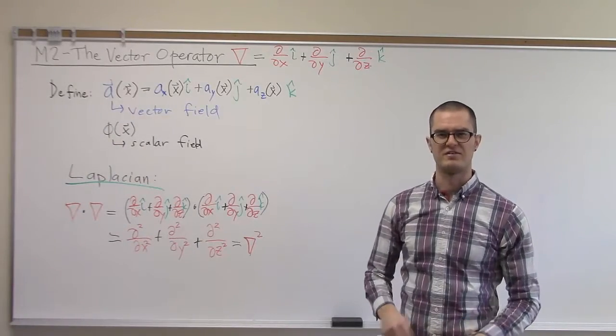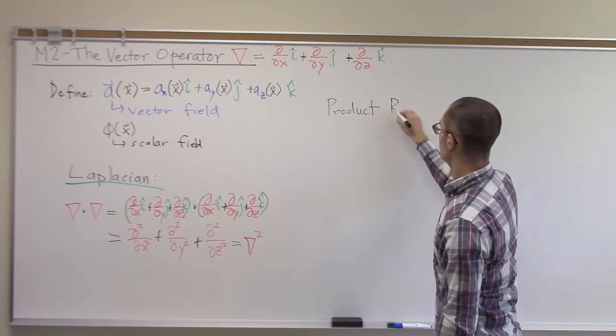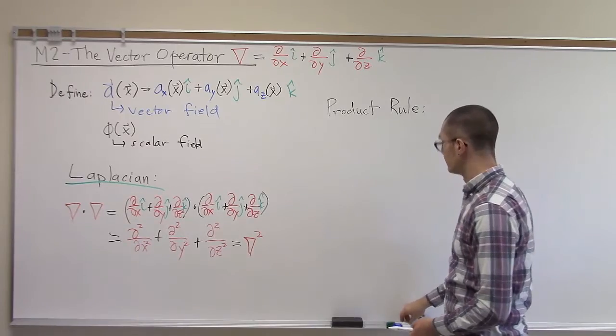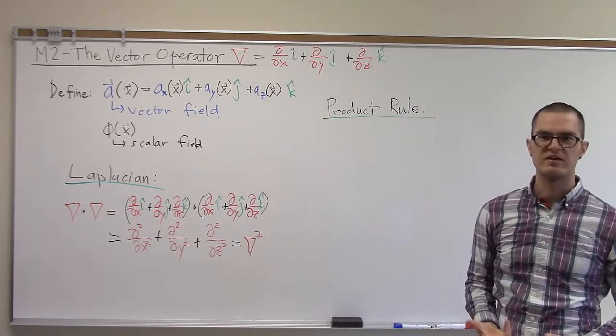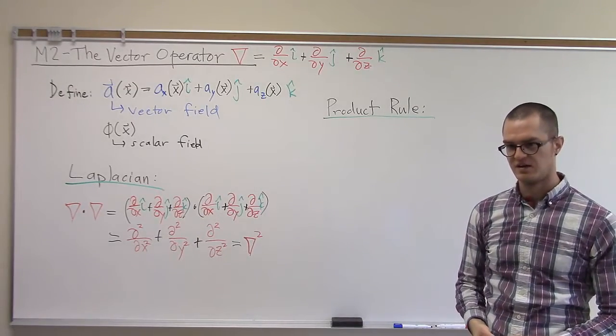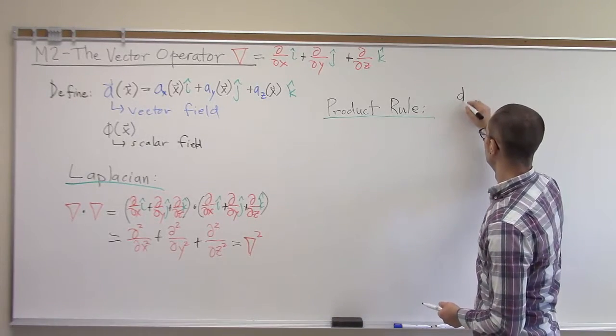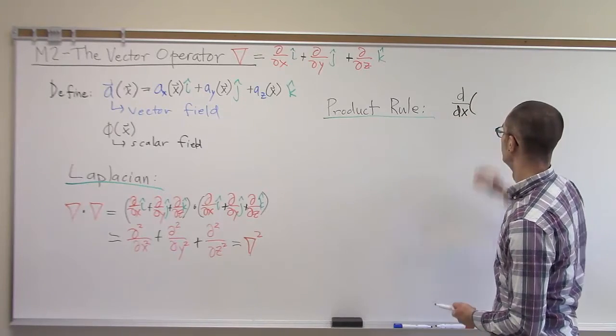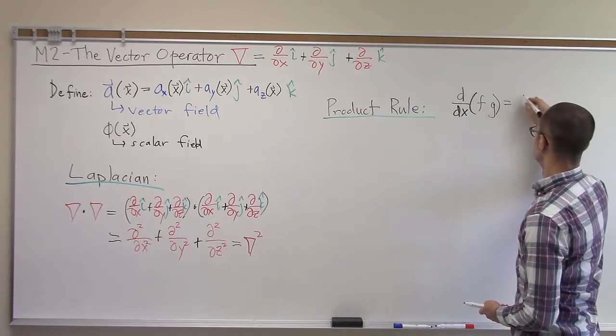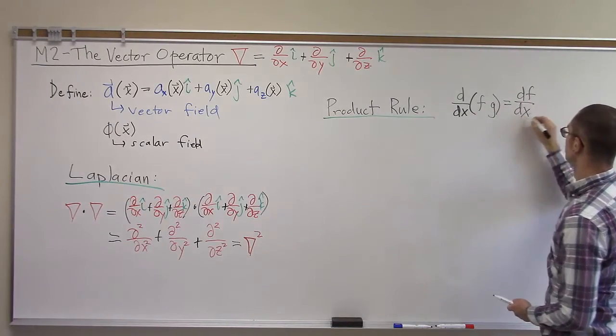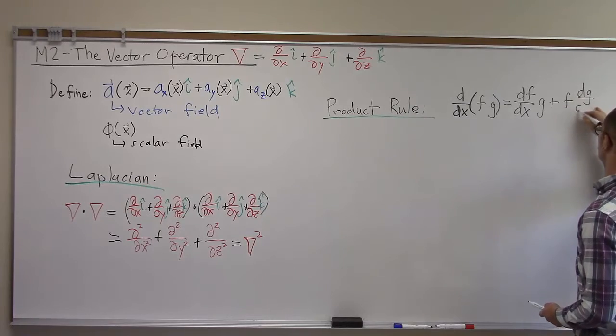We'll now look at how we define the product rule in differential calculus when we're using this vector operator. So in calculus, the product rule is when I take the derivative of two functions. If I'm saying d by dx of two functions, say f and g, that's equal to df by dx times g plus f times dg by dx.